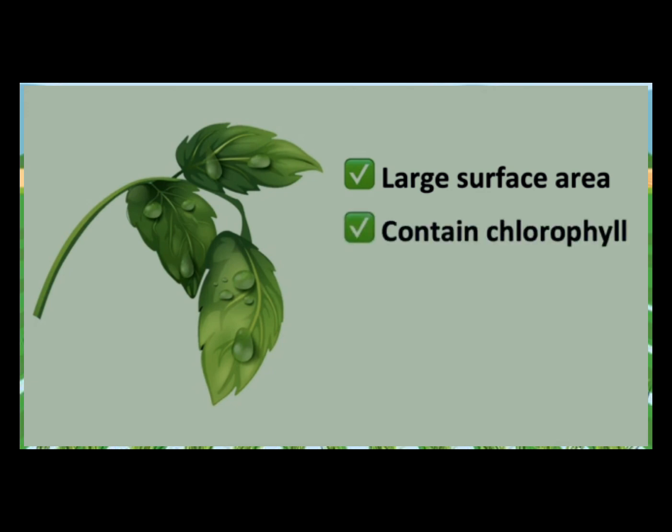Secondly, leaves are green due to the chlorophyll in the chloroplasts. This helps them absorb sunlight. Thirdly, leaves are thin which allows the diffusion of gases in and out of the leaf.